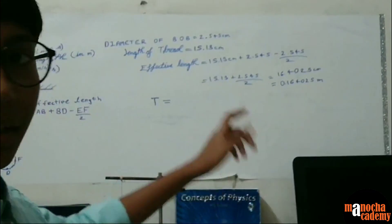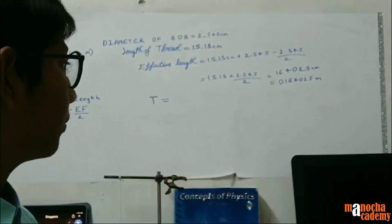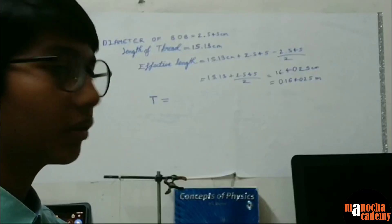Now we need the length in meters so that we can substitute this in the original formula. So the length will be 0.164025 meters.